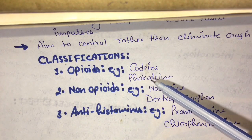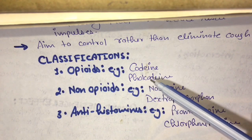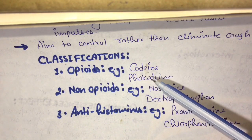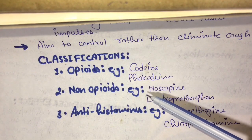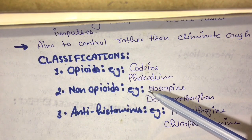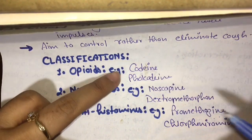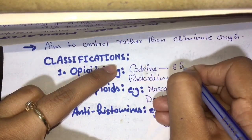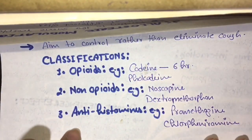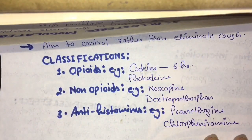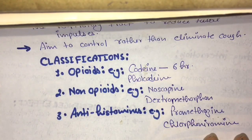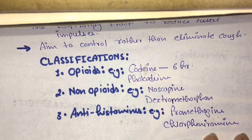For example, codeine — codeine is an opium alkaloid. It suppresses the cough for 6 hours. The adverse effects include constipation, respiratory depression, and drowsiness.